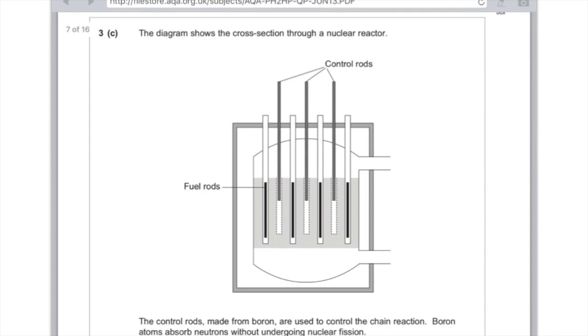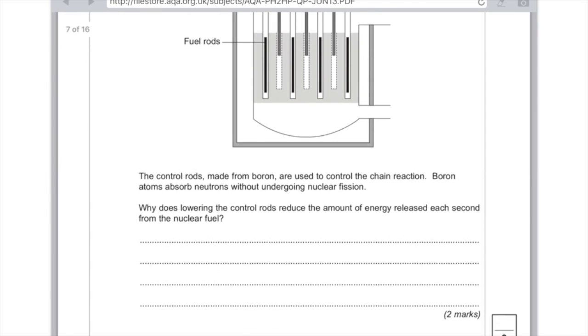3c, the diagram shows the cross-section through a nuclear reactor. The control rods made from boron are used to control the chain reaction. Boron atoms absorb neutrons without undergoing nuclear fission. Why does lowering the control rods reduce the amount of energy released each second from the nuclear fuel? And the point here is that the control rods are used to literally control the reaction to prevent it being dangerous. So for the first mark, you want to state that neutrons are absorbed by the control rods. This means that there are fewer neutrons. And as a result of this, the chain reaction slows down. So you could have said, for the two marks, any two from those three points. But I would probably say the neutrons are absorbed by the control rods, meaning that there are fewer neutrons. Although really, that's the same point. So maybe it would be good to say that the chain reaction slows down.